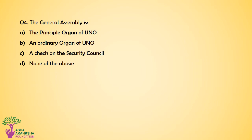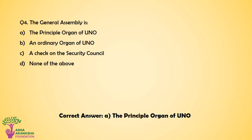Question number 4. The General Assembly is Option A: The principal organ of United Nations. Option B: An ordinary organ of United Nations. Option C: A check on the Security Council. Option D: None of the above. The correct answer for this question is Option A — The principal organ of United Nations.